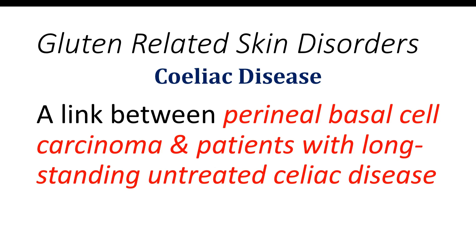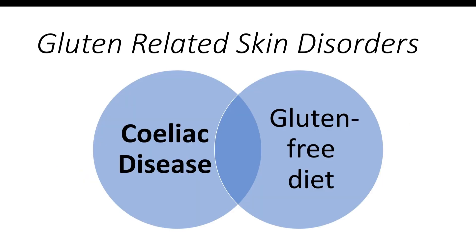A complete examination of all mucous membranes, including the anal mucosa, is important when celiac disease is suspected. There are currently no specific guidelines for diagnosing and treating skin diseases associated with celiac disease aside from dermatitis herpetiformis. Histological, immunopathological, and serological examinations, along with tests such as patch tests, can aid in achieving an accurate diagnosis. A gluten-free diet is essential for all patients and may be effective in addressing skin lesions in conjunction with established treatment guidelines.